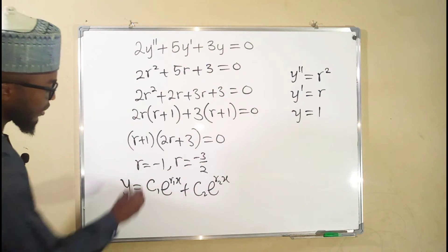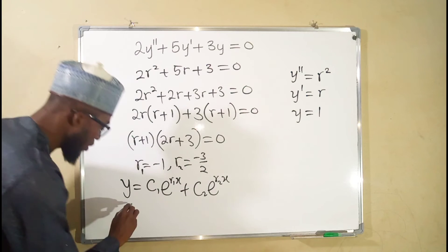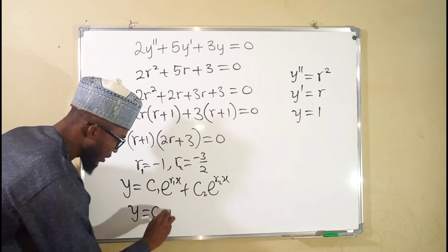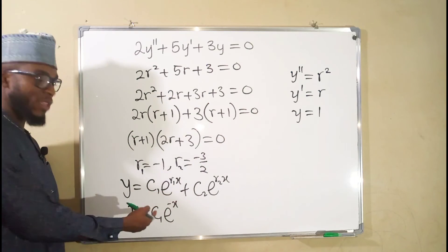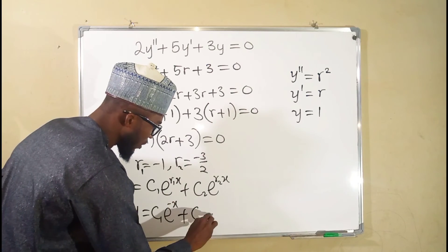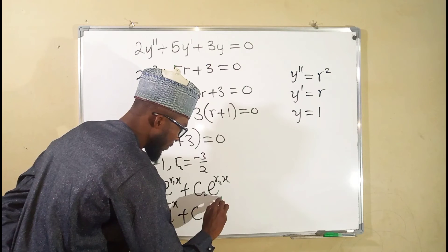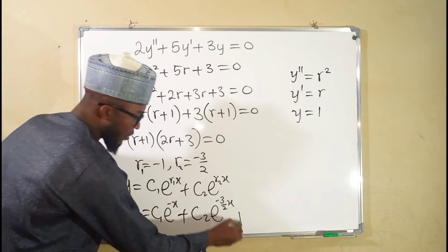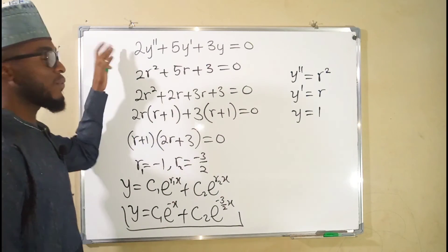And now r1, you can see them, r1 and r2. R1 is negative 1, so this is equal to c1, e to the negative x, because negative 1 times x is negative x, plus c2, e to the r2, which is negative 3 over 2x. And this is our general solution for this differential equation.